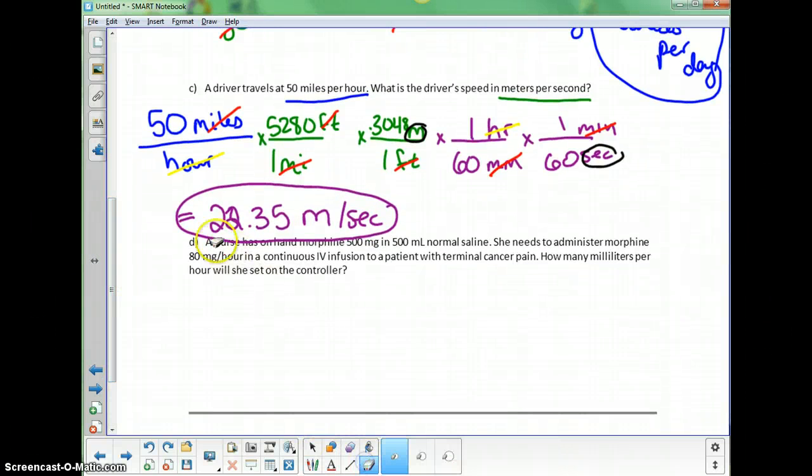Let's look at the next one. A nurse has on hand 500 milligrams of morphine and 500 milliliters of normal saline. She needs to administer morphine 80 milligrams per hour in a continuous IV infusion to a patient with cancer pain. How many milliliters per hour will she set on the controller? So I'm giving 80 milligrams per hour.